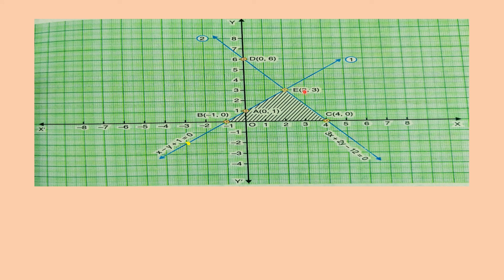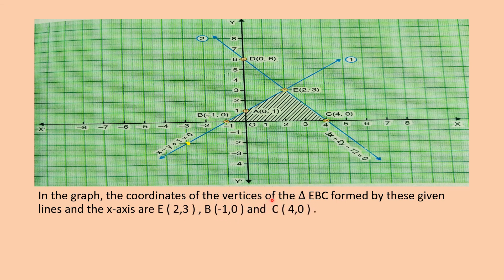The triangular region formed by the two lines and the x-axis is triangle EBC. The coordinates of the vertices are: E(2, 3), B(−1, 0), and C(4, 0). Mark and shade this triangular region in the graph.